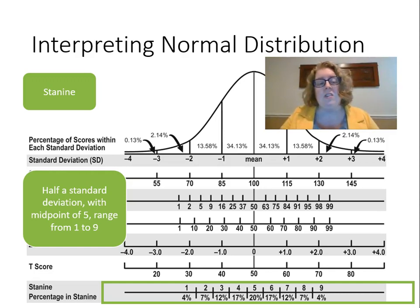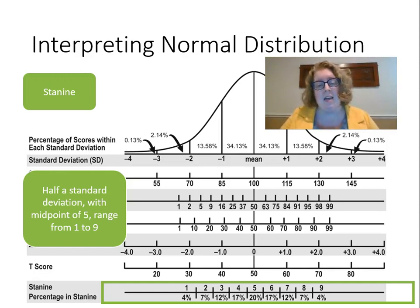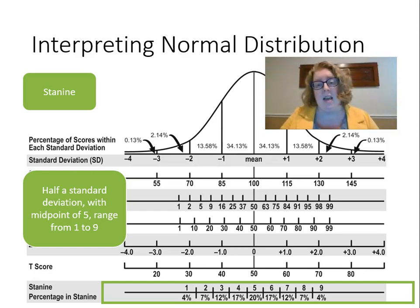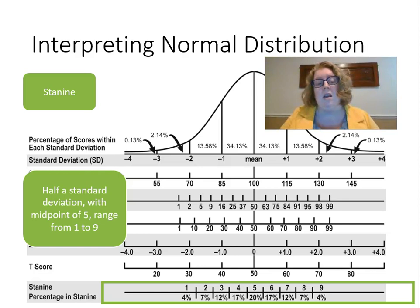We don't use stanines a lot anymore in reporting scores because they're not very accurate — we never report 4.5 in a stanine, it's always a whole number. You'll see older school psychometricians or psychologists report stanines as a way of grouping students by the normal distribution. T-scores, z-scores, percentile ranks, and standard scores can all be reported as decimals or fractions — everything but the stanine, which is always reported as a whole number.